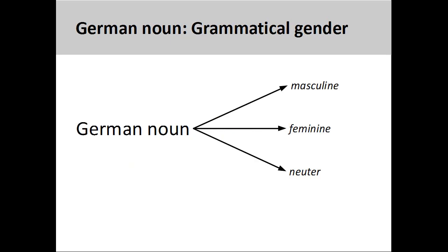Unlike an English noun, a German noun has a grammatical gender. It can be either masculine, feminine, or neuter. The grammatical gender can be related to the biological gender of the noun, if it has one, but usually there is no connection.